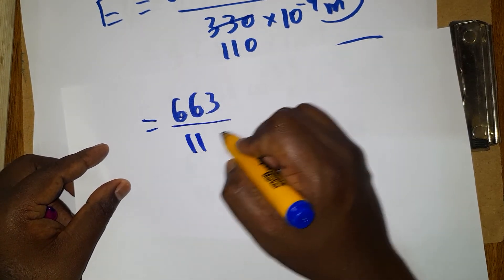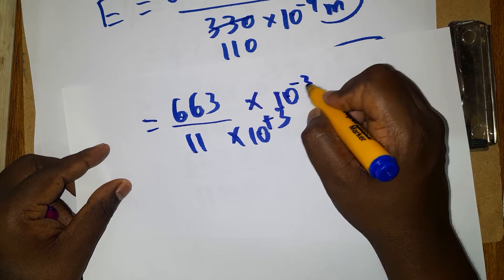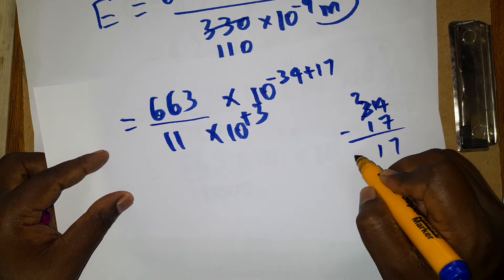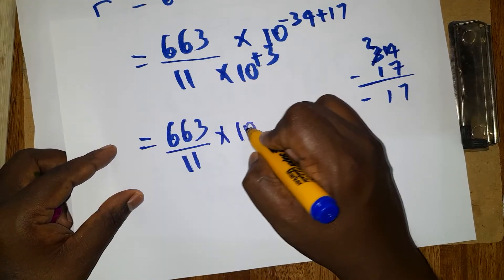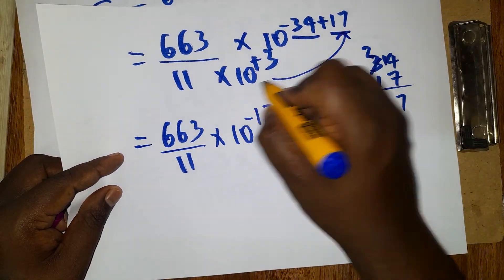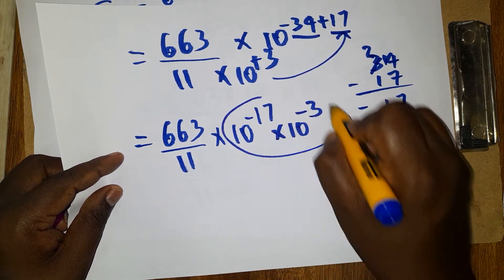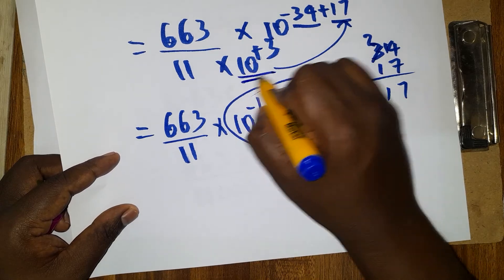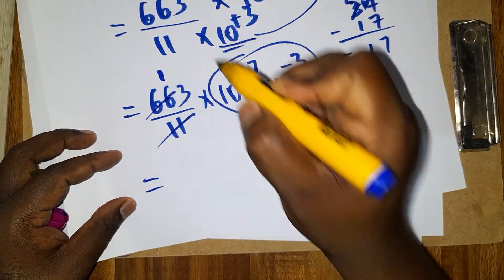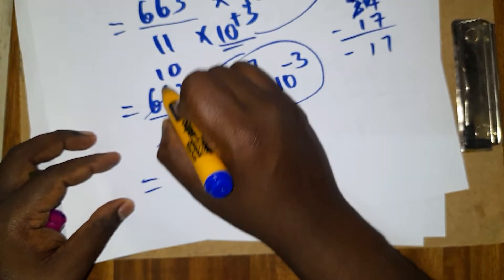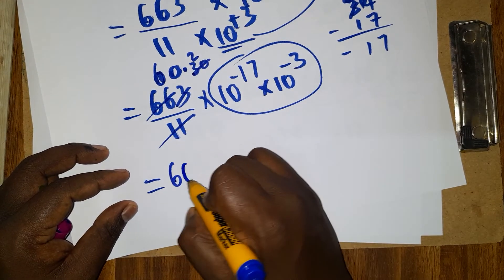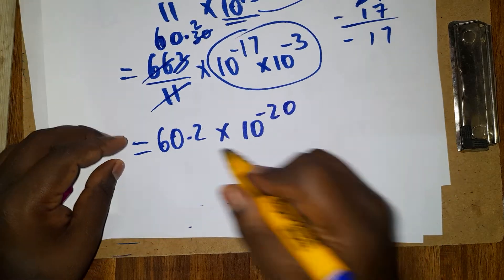This simplifies to 663 divided by 11 × 10³ into 10⁻¹⁷. Since minus 34 plus 17 gives minus 17, and the 1000 factor adds 10⁺³ to denominator making it 10⁻³, the total power is 10⁻²⁰. Dividing 663 by 11: 11 × 60 = 660, remainder 3, giving approximately 60.2 × 10⁻²⁰ joules.